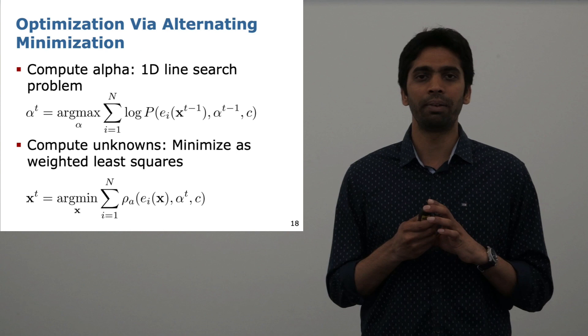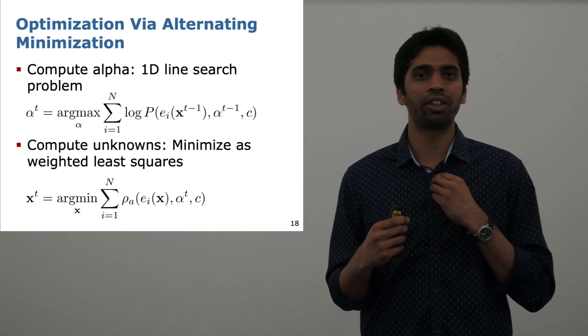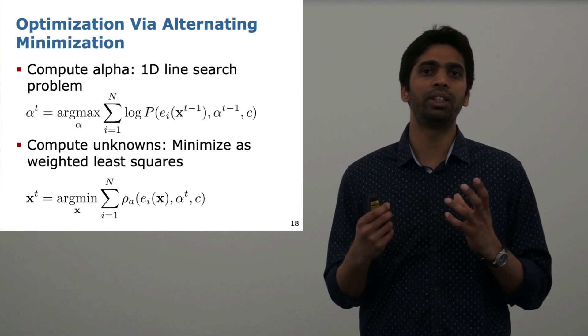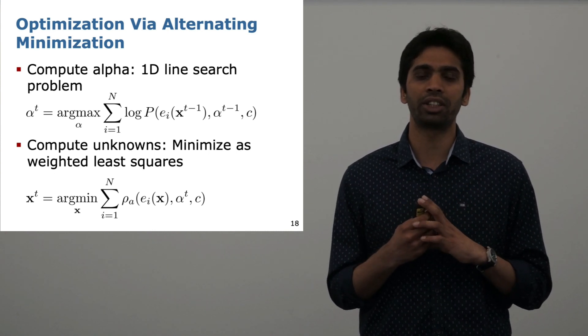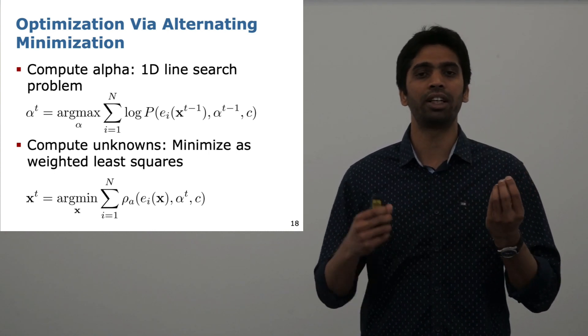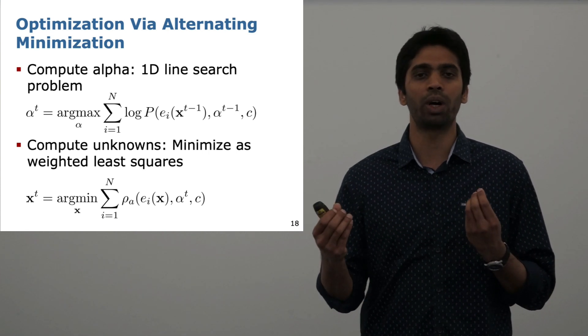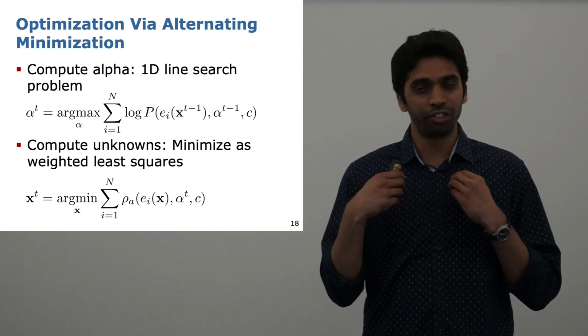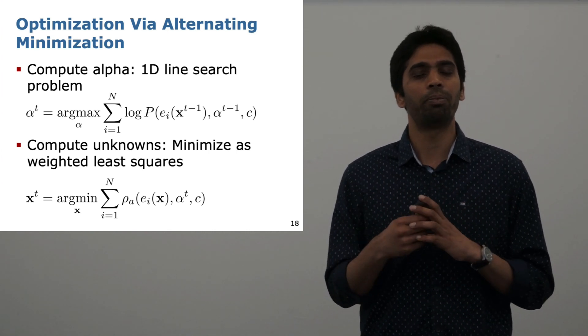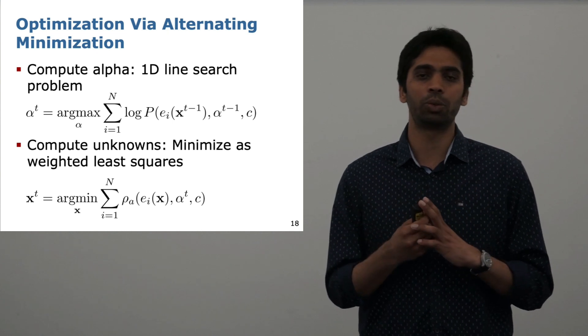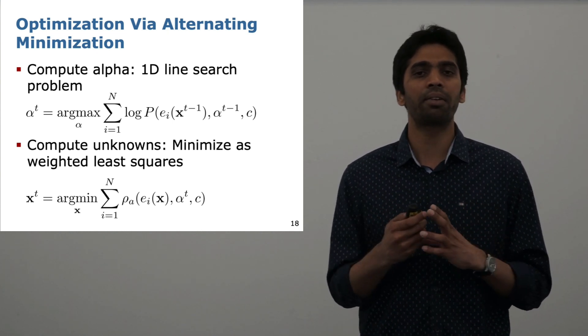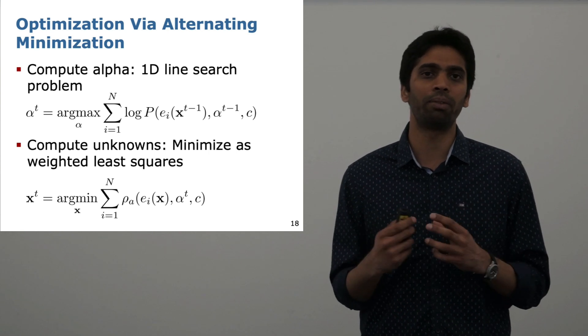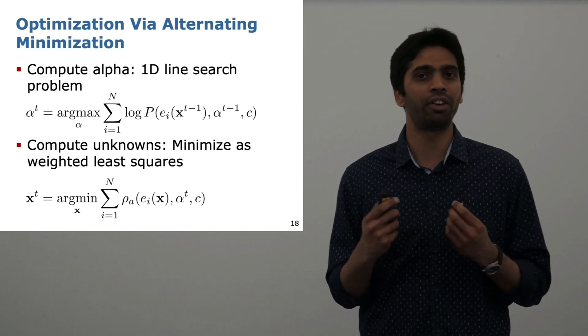Therefore, what we propose in this paper is to compute alpha separately from our unknowns x. We do this in an alternating minimization fashion, where we compute alpha given the best parameter estimates at time t minus one, and then we fix this alpha and use it to compute our unknowns in the standard least squares problem. In our approach, this alpha computation comes down to a 1D line search problem, thereby making the calculation fairly easy.